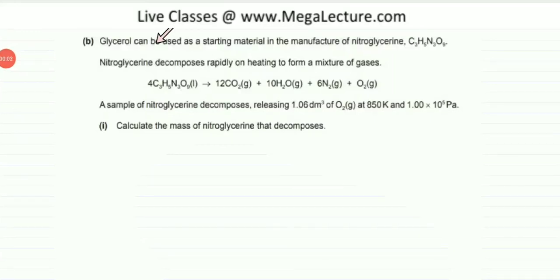The following question reads that glycerol can be used as a starting material in the manufacture of nitroglycerin. Nitroglycerin decomposes rapidly on heating to form a mixture of gases, so you are given an equation. The equation is balanced and given. A sample of nitroglycerin decomposes releasing 1.06 dm³ of oxygen at 850 Kelvins and 1×10⁵ Pascals. Calculate the mass of nitroglycerin that decomposes.